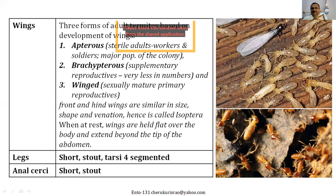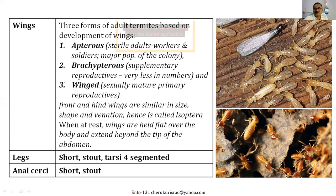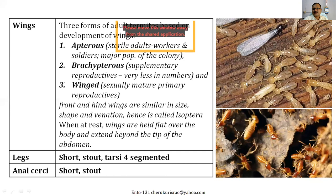Three important and specific characters for Isoptera: first, the moniliform antenna — very specific. Second, as far as wings are concerned, there are three kinds of adults — apterous, brachypterous, and pterous (winged adults); if winged, the forewings and hindwings are similar with no difference at all. Third, they have very well-developed mandibulate mouthparts, and in some insects there is a frontal gland on the head used for secretion to repel enemies.